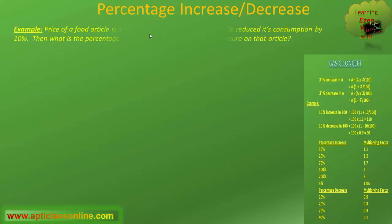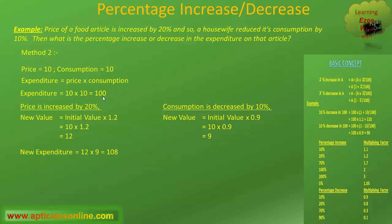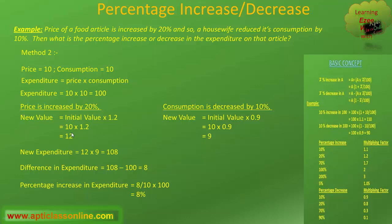Now we will solve this example using Method 2. In this method the initial values of price and consumption are both taken as 10. Putting these into our formula, expenditure equals 10 × 10 = 100. As per the question, there is a 20 percent increase in price, so the new price is 10 × 1.2 = 12. There is a 10 percent decrease in consumption, so the new consumption is 10 × 0.9 = 9. Putting these values into the formula, the new expenditure is 12 × 9 = 108.